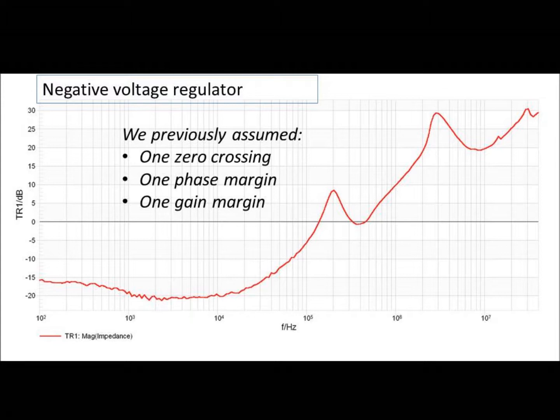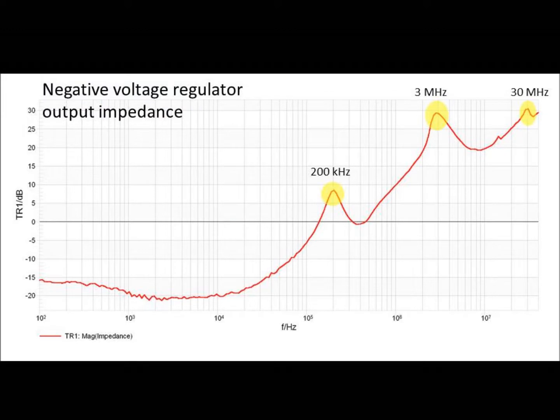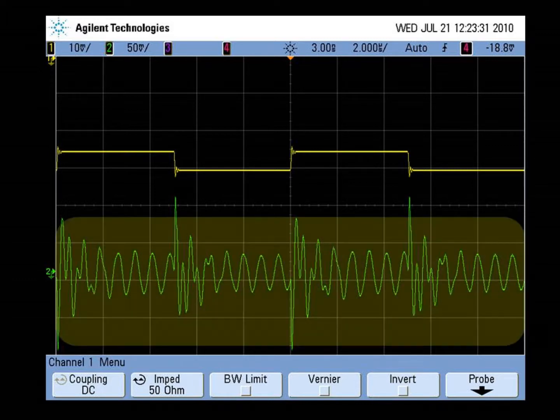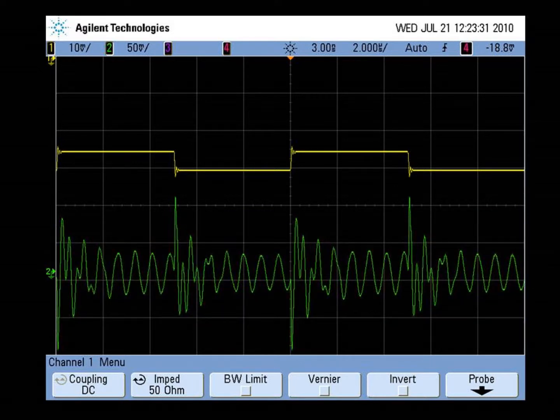However, there is no rule that says that we can only have one zero crossing, one phase margin, or one gain margin. And in this impedance plot we see evidence of at least three zero crossings, each of which presents poor stability. Taking a closer look at the output in the time domain allows us to see the multiple frequencies simultaneously. We could distinguish them a bit better in the spectrum domain, but even in the time domain we can clearly see the presence of multiple frequencies.